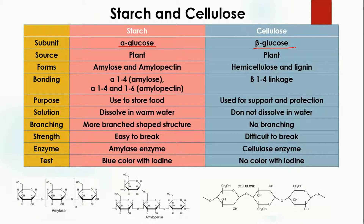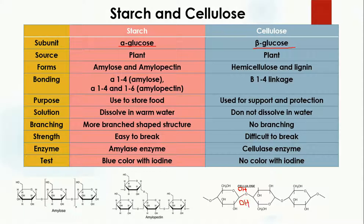When we talk about alpha and beta, we can see that this is one glucose molecule. In the case of beta, the OH molecule is present above the plane, while in the case of alpha it is present below. This is the difference between starch and cellulose: cellulose has beta glucose and starch has alpha glucose. In starch this part has OH below the plane, while in cellulose the upper plane contains OH.